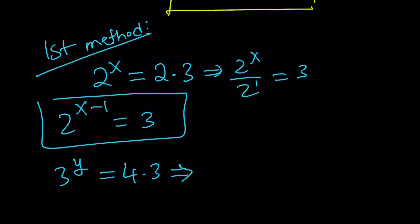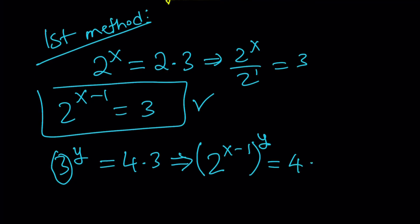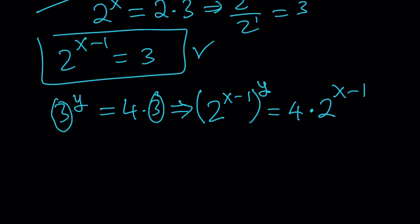So 3^y can be written as 4×3. And since 3 can be written as 2^(x-1), remember, our goal is to express y in terms of x. So let's go ahead and replace the 3 with 2^(x-1). Now, we're not getting rid of the y, but we are kind of getting rid of the 3 because we want to end up with powers of 2 only. And again, let's replace this 3 with 2^(x-1). Now, notice that we no longer have 3s, but everything is a power of 2 here, which is nice. Let's go ahead and simplify this.